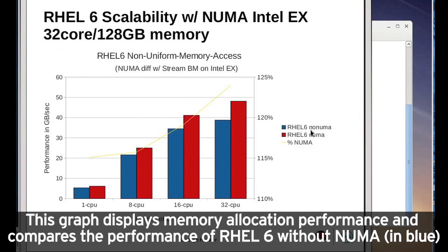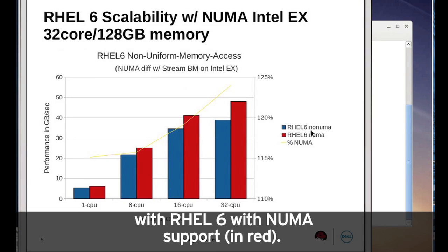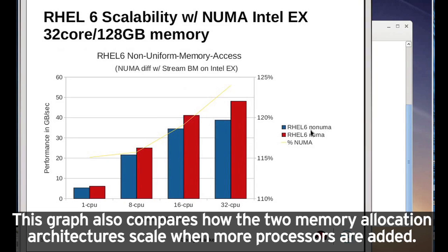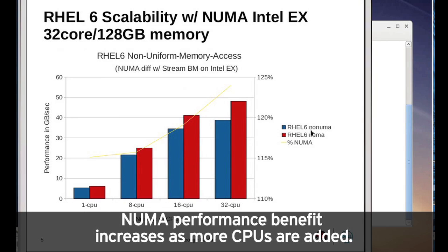This graph displays memory allocation performance and compares the performance of RHEL 6 without NUMA in blue with RHEL 6 with NUMA support in red. This graph also compares how the two memory allocation architectures scale when more processors are added. NUMA performance benefit increases as more CPUs are added.